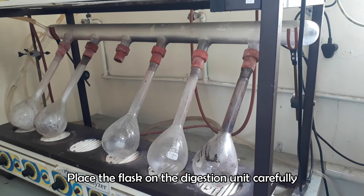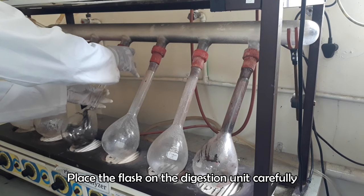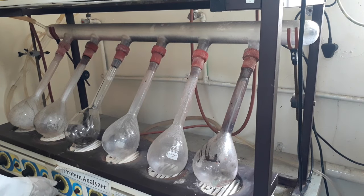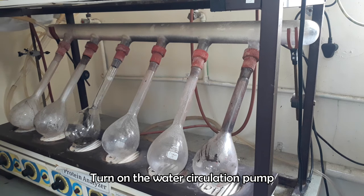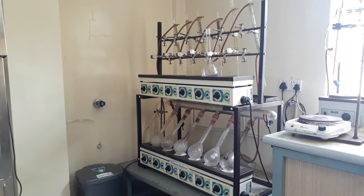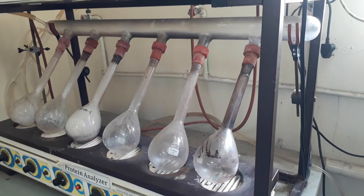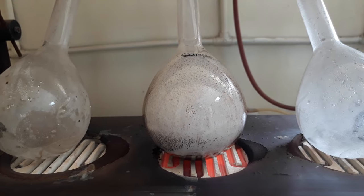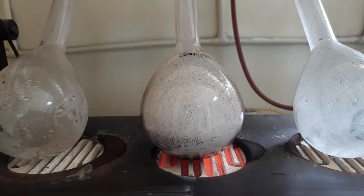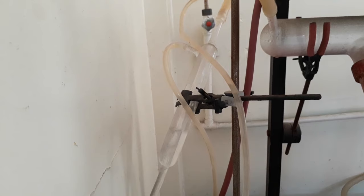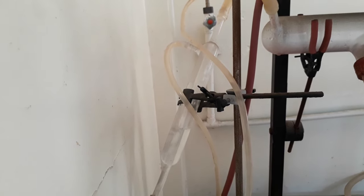Finally place the sample containing flask on the digester unit. Turn on the digester and heat the flask at 200 to 300 degrees Celsius. If you use a manual digester, don't forget to turn on the water circulation pump of fume receiving unit. Run the digester for 2 hours.